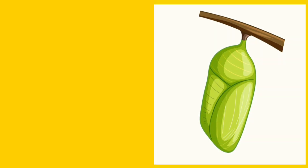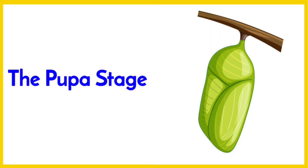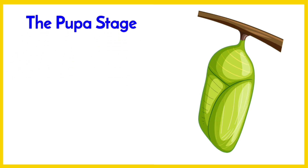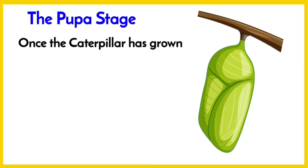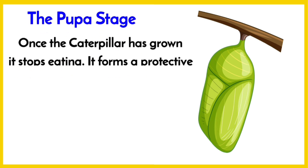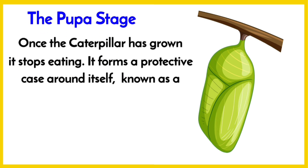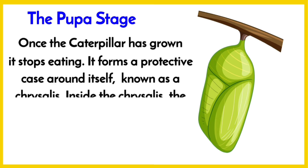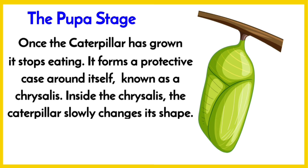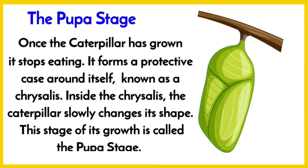The third stage is the pupa stage. Once the caterpillar has grown, it stops eating and forms a protective case around itself known as the chrysalis. Inside the chrysalis, the caterpillar slowly changes its shape. This stage of its growth is called the pupa stage.